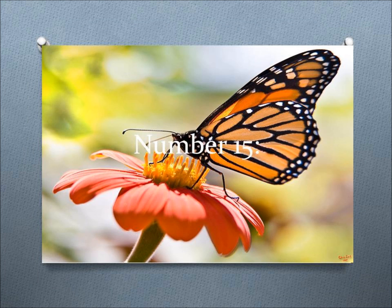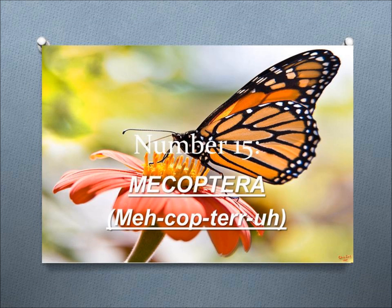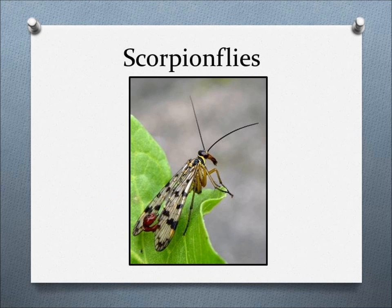Number 15, Mecoptera. This order includes scorpion flies, insects that range from 3 to 30 millimeters in length, have caterpillar-like larvae and are carnivorous as adults, and attract mates by using pheromones.